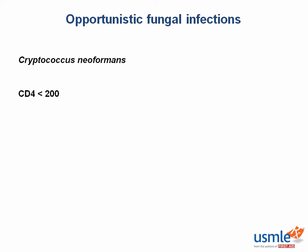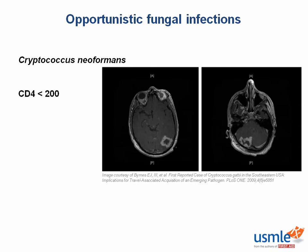In addition to cryptococcal meningitis, patients can develop a cryptococcoma in the gray matter of the brain. The histopathological findings include soap bubble lesions or small cyst-like spaces in the gray matter. On MRI, cryptococcomas appear as ring-enhancing lesions. Another AIDS-defining illness that appears as a ring-enhancing lesion on brain imaging is toxoplasmosis, which will be covered in more detail later.